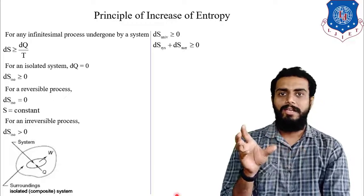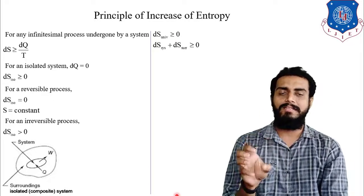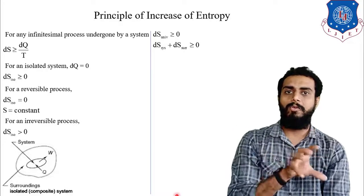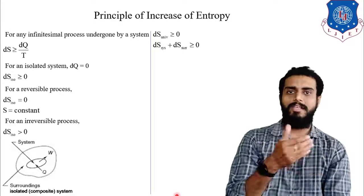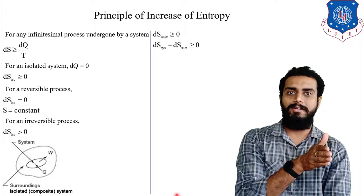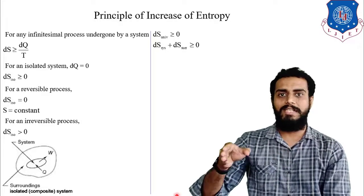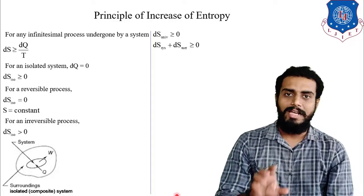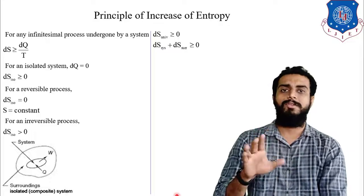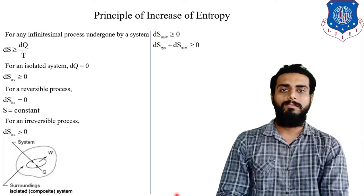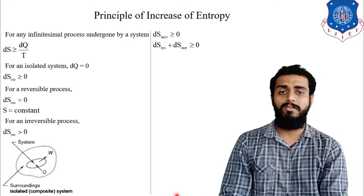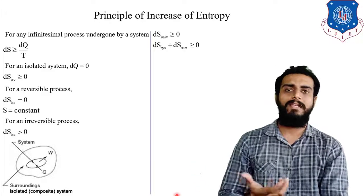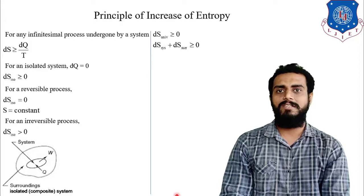For example: if the system entropy is locally decreasing by minus 10 kJ/kg·K, and the surrounding entropy change is plus 15 kJ/kg·K, then together you will have plus 5 entropy change for the universe. So entropy change for any reversible or irreversible process will always be greater than or equal to zero. Locally somewhere the entropy may decrease, but universally the entropy will always increase. That is called the Principle of Increase of Entropy.